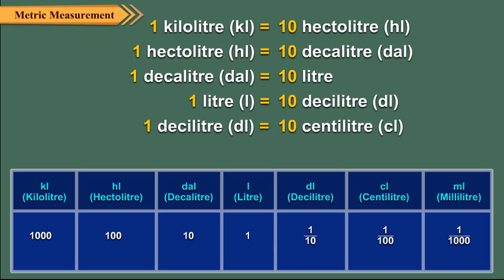One deciliter is equal to ten centiliters. One centiliter is equal to ten milliliters.